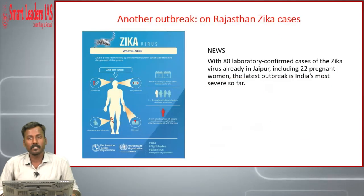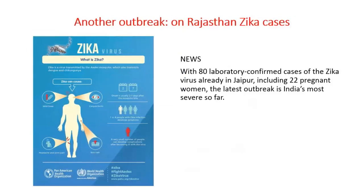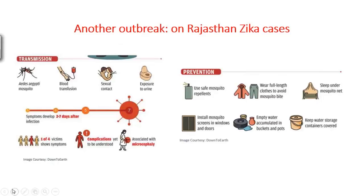The next article is about the outbreak of Zika virus in Rajasthan. Rajasthan has witnessed the largest outbreak of Zika virus in India — around 80 cases have been confirmed, of which 22 are pregnant women. Zika is a virus transmitted by the Aedes mosquito, which also acts as the vector for dengue. It can cause mild fever, conjunctivitis, headache, joint pain, and skin rashes.